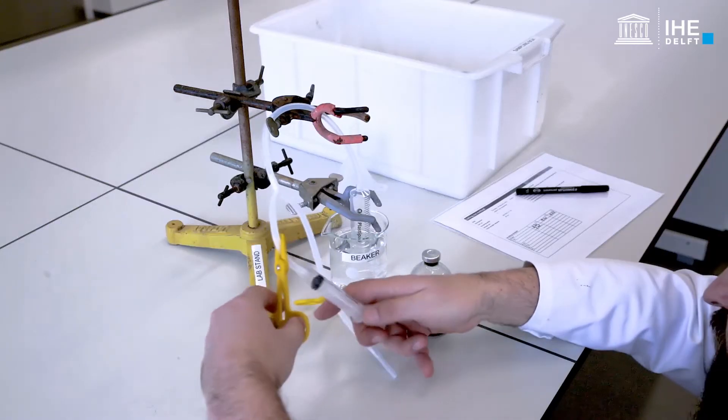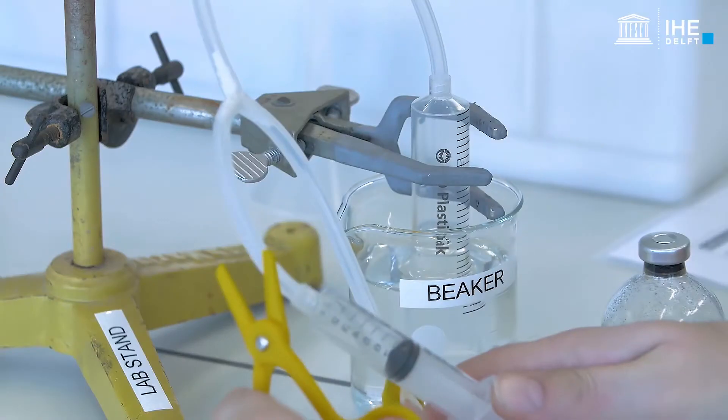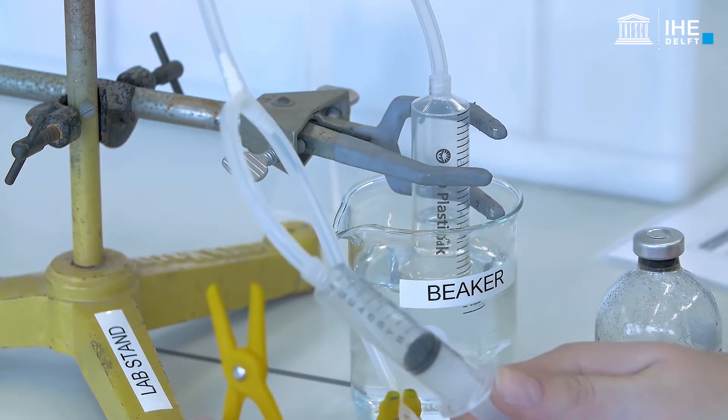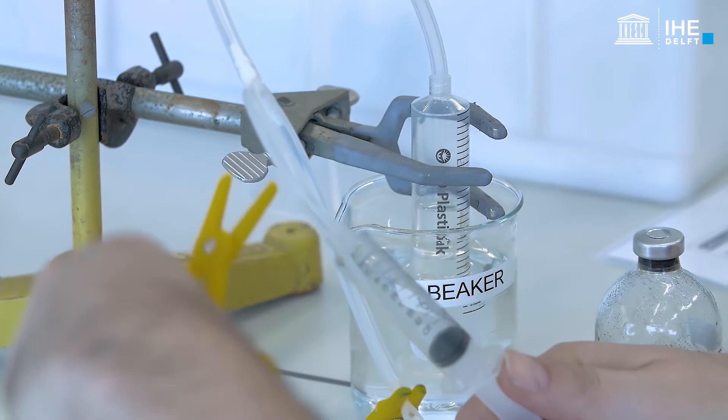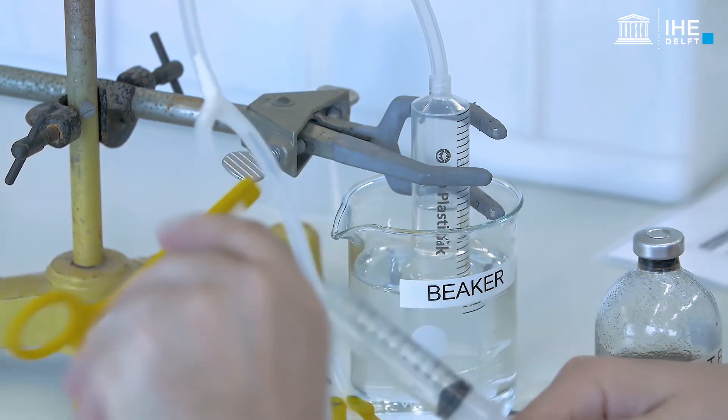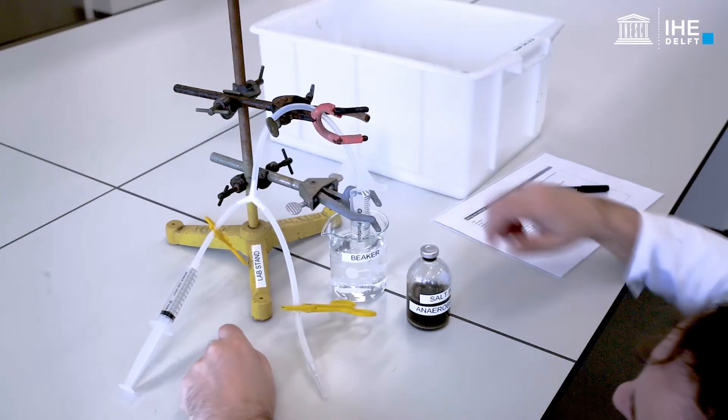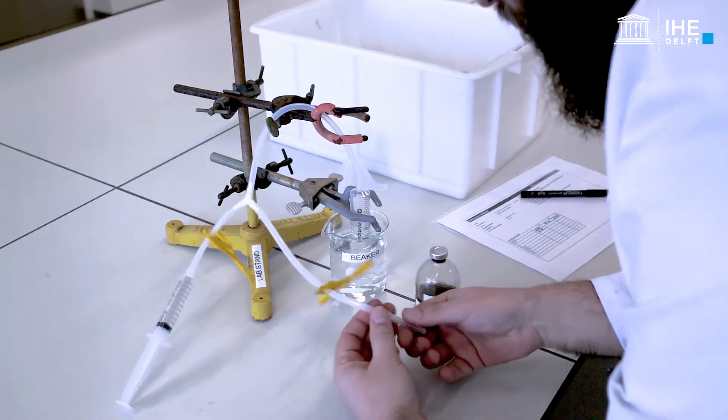Before sampling the headspace of the serum bottles to conduct the gas analysis with gas chromatography, the pressure in the headspace needs to be equilibrated with the atmospheric pressure by allowing the gas in the headspace to expand in a submerged graduated syringe and measuring the volume expansion.